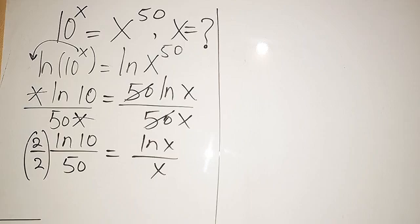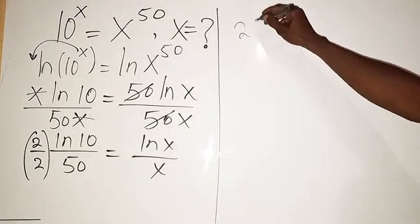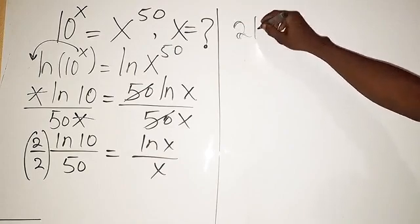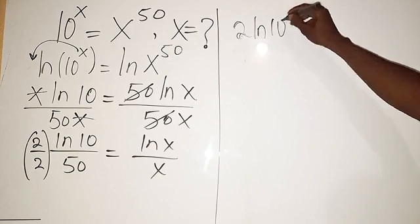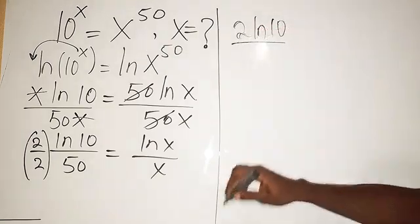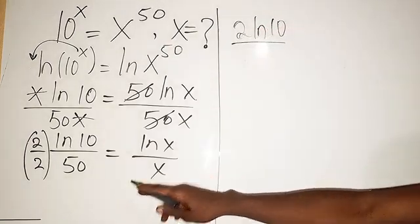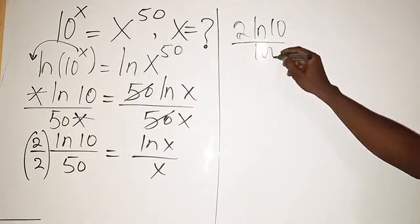Now from here we can see that we have 2, so that's going to be 2 ln 10. See, 2 ln of 10 divided by 2 times 50, that's going to be 100, then equals ln of x over x.